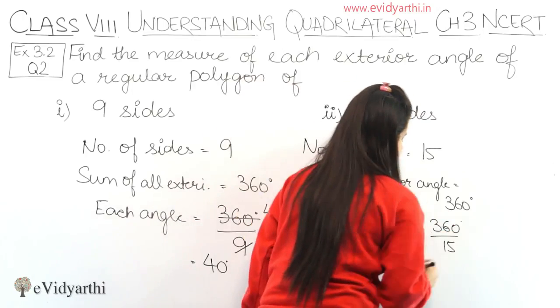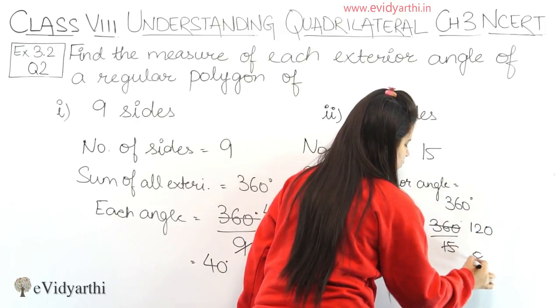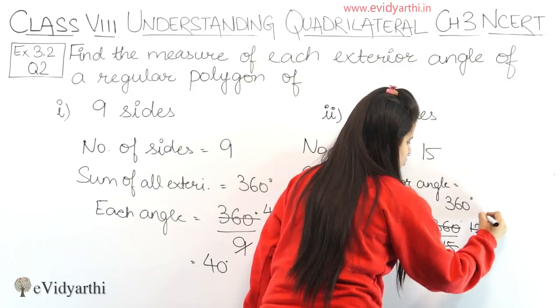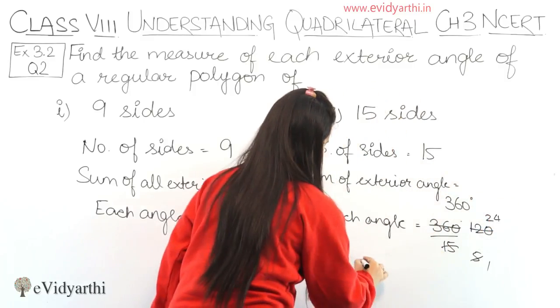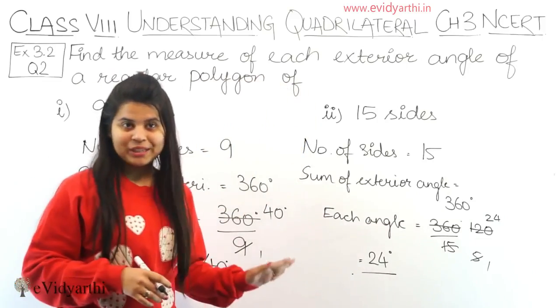We'll divide this. Cut by 3. Then this will be 1, 2, 0, and this will be 5. Then this will be 1, this will be 2, 4. So this is 24 degrees. Means each angle will be of 24 degrees. Okay.